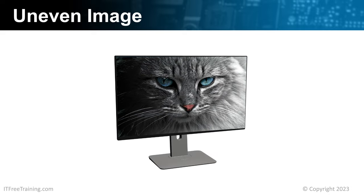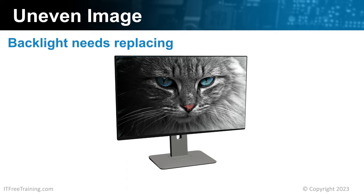In some cases, you may find that the screen is not evenly lit. Generally, you will find that the left and right sides of the screen are of different brightness, or maybe the top and bottom. When this occurs, it is most likely that the backlight needs replacing. The backlight essentially lights up the screen. Some LCD screens will have two or more backlights. If one fails, you may get this effect, or if the backlight is not providing enough light for the whole screen.